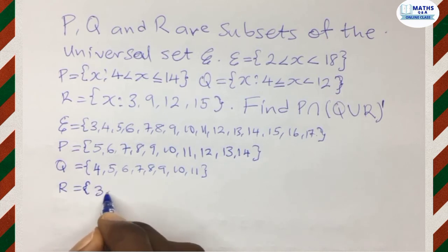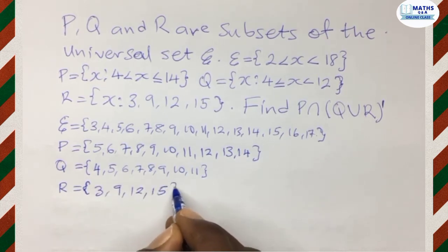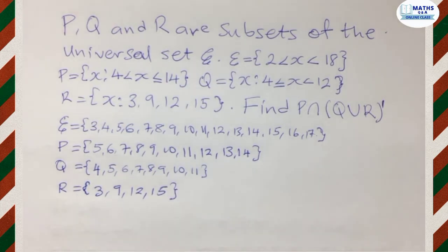So we list them down nicely. We have 3, 9, 12 and then 15. With the question, we would have to first start with the bracket. The bracket contains the union of Q and R.